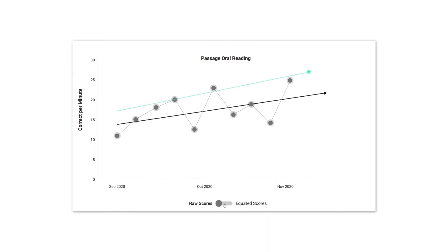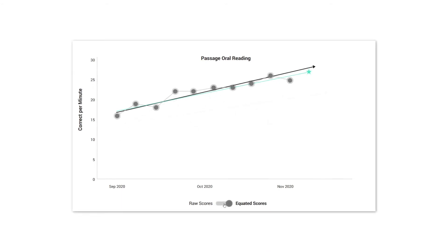Now, when we convert that same performance to equated scores, we can see that the performance is much easier to evaluate. The scores are much closer to the aim line, and we get a much clearer sense of the effects of this intervention. It's the same performance of the child, but without noise from passages of different difficulty.